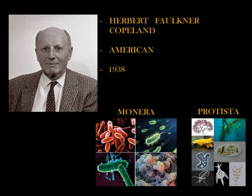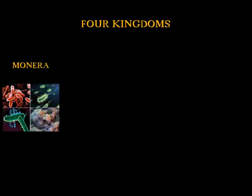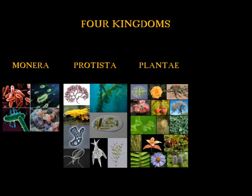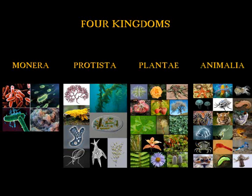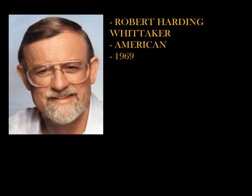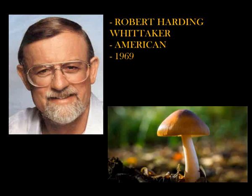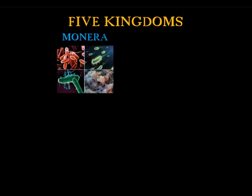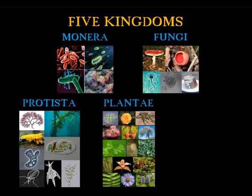According to Copeland, there were four kingdoms: Monera, Protista, Plantae, and Animalia. In 1969, the American Robert Harding Whittaker made one of the most important statements about the classification of life. He established that fungi are not plants, but another group of organisms that must be separated from plants. He was the first to propose the Five Kingdoms classification. After him, what we had was: Monera, Protista, Fungi, Plantae, and Animalia.